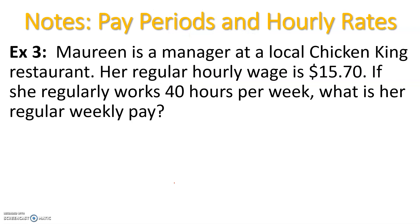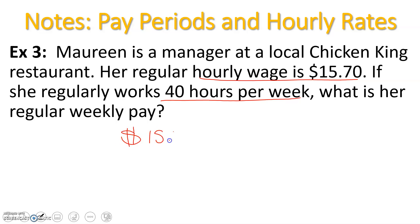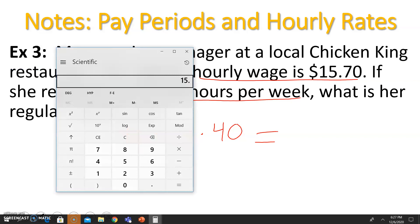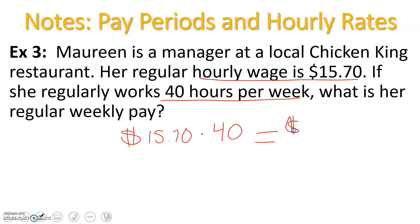Example three: Maureen is a manager at a local Chicken King restaurant. Her regular hourly wage is $15.70. If she works regularly 40 hours per week, what is her regular weekly pay? She makes $15.70 per hour working 40 hours per week, so we multiply those together: $15.70 times 40 equals $628.00 per week.